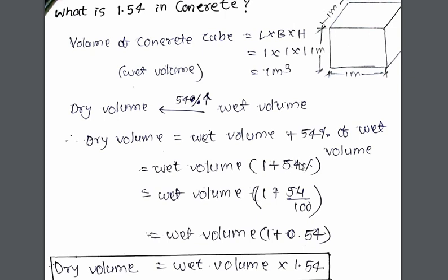So 54% can also be written as 54 divided by 100, which is equal to 0.54. Therefore, dry value equals to wet value into 1.54.